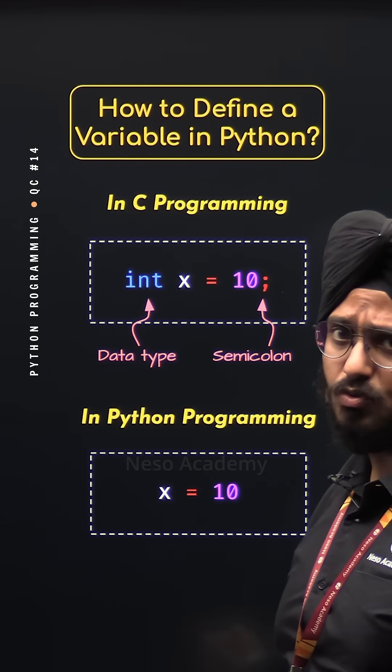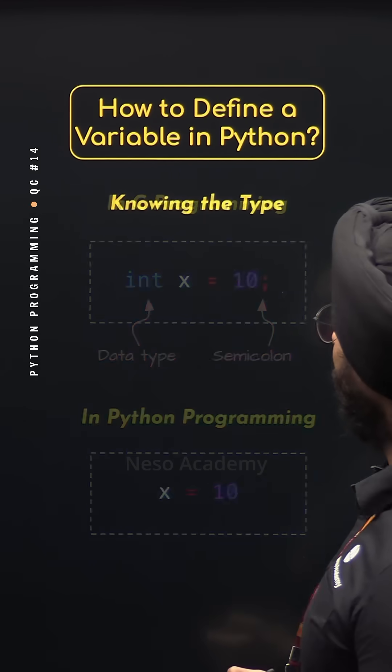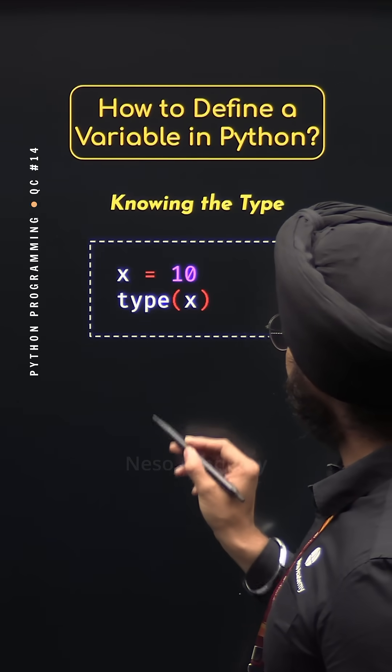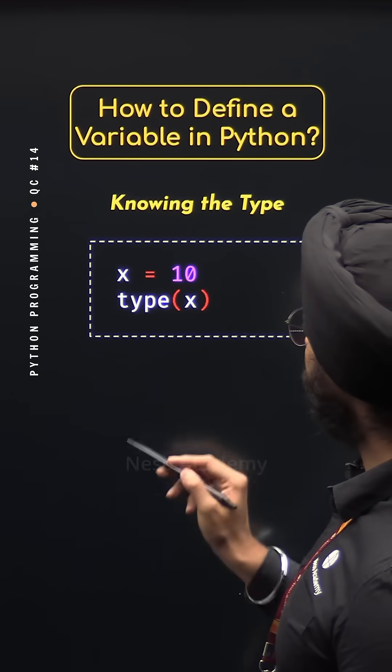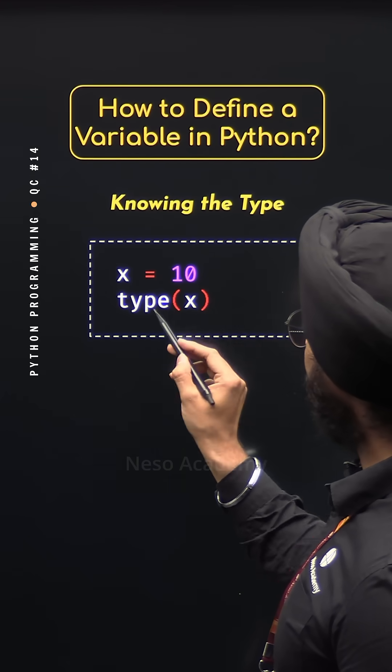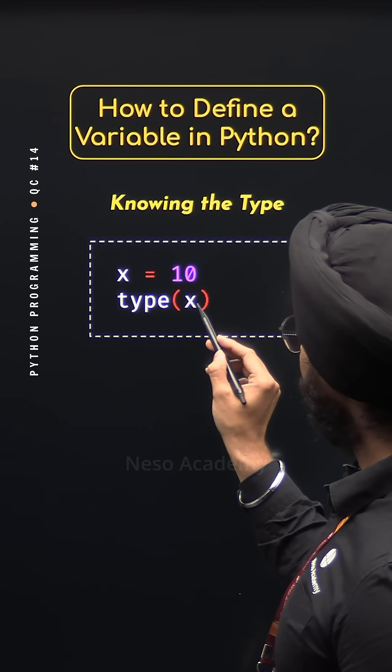Now what if we want to know the type of the variable? This is also straightforward. We can know the type with the help of the type function like this. We can pass the variable which we want to know the type of. Here we have passed the variable x to know its type.